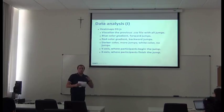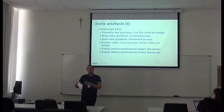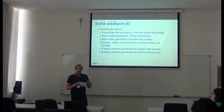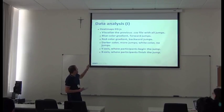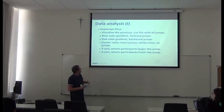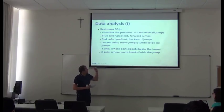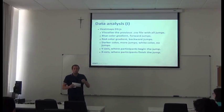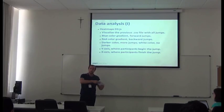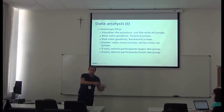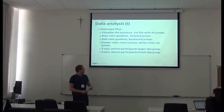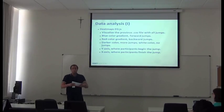If the heatmap has darker colors, that means more number of jumps. If it has white or lighter color, it means fewer jumps. In the heatmaps, the X-axis represents from where the student begins the jump, and the Y-axis represents where the student finishes the jump.